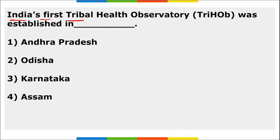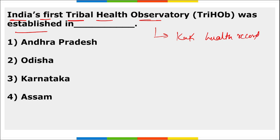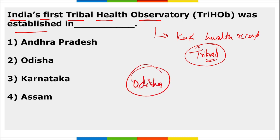India's first Tribal Health Observatory was established to maintain health records of tribal people. This India's first Tribal Health Observatory was set up in Odisha.